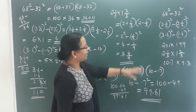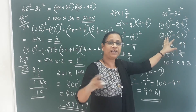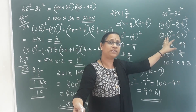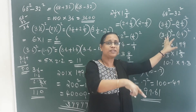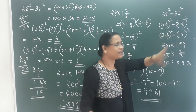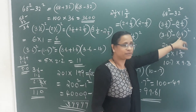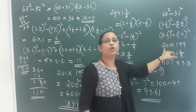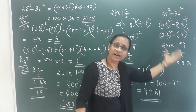The answer is a plus b into a minus b, that means a square minus b square. This is a square minus b square, which means a plus b into a minus b.